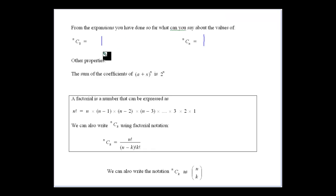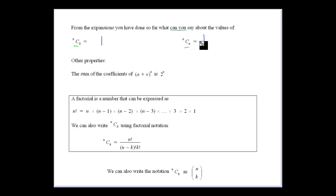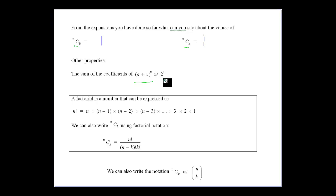Using those ideas, what can we say about the values of nC0 and nCn? Well, they're the two end ones of Pascal's triangle. nC0 is at one end, nCn at the other. They're both equal to 1. Another property we need to know is that the sum of all the coefficients will be 2 to the power of n, which we'll probably prove as an exercise in class.